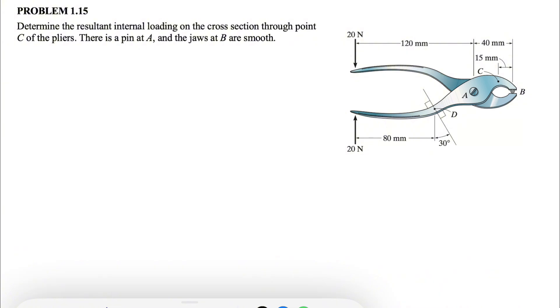There is a pin at point A and the jaw at B is smooth, and that smooth means we don't consider any friction or any horizontal component at B. So we can start with the free body diagram of one of the handles, maybe with the top part. I'm just going to show it in here because my drawing is not the greatest.